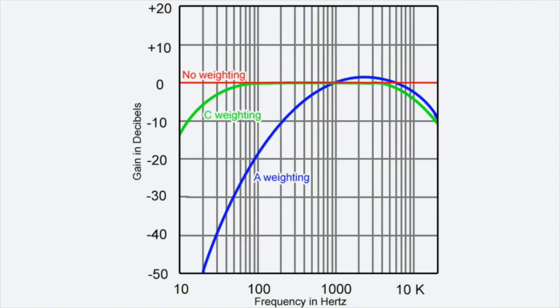Often the average is weighted to better mimic the frequency response of human hearing. This chart shows the standard dBC and dBA weighting curves.